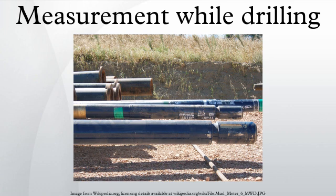Mud pulse telemetry is the most common method of data transmission used by MWD tools. Downhole, a valve is operated to restrict the flow of the drilling mud according to the digital information to be transmitted. This creates pressure fluctuations representing the information. The pressure fluctuations propagate within the drilling fluid towards the surface where they are received by pressure sensors. On the surface, the received pressure signals are processed by computers to reconstruct the information. The technology is available in three varieties: positive pulse, negative pulse, and continuous wave.